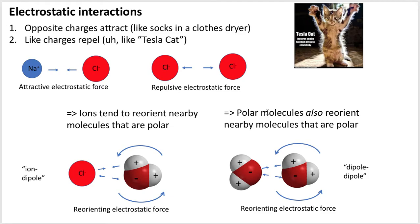Ions tend to reorient nearby polar molecules. Here, a chloride ion is negative, so it tugs on the positive part of a nearby water molecule while pushing away the negative part, producing a twisting or torquing force to reorient it. Similarly, polar molecules reorient other nearby polar molecules: the negative part of one water molecule tugs on the hydrogen of another, while simultaneously repelling its negative part, again causing reorientation.